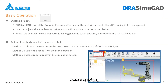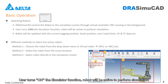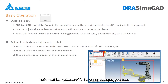Switching Robots: DIA Simu CAD controls the robot in the simulation screen through virtual controller VRC running in the background. When the user turns on the simulator function, the robot will be active to perform simulation. The robot will be updated with the current jogging position, teach position, over-travel limit, UF and TF data, etc.